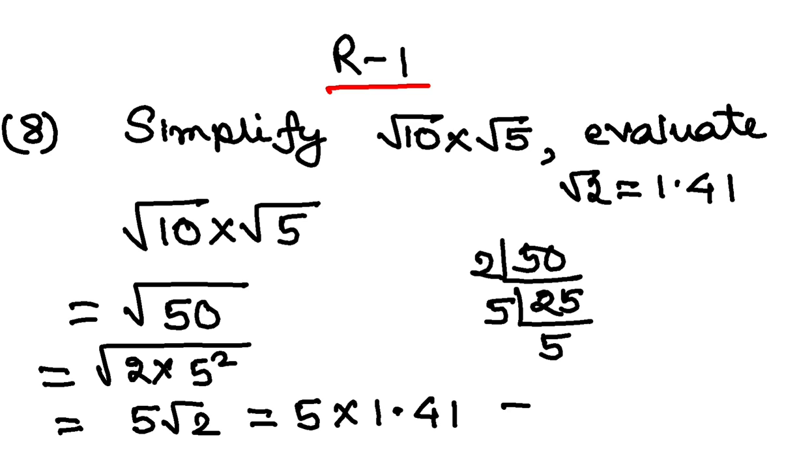So, 5 into 1.41 is nothing but 7.05, right. Very simple question. Now, in the next video, we shall discuss question number 9.